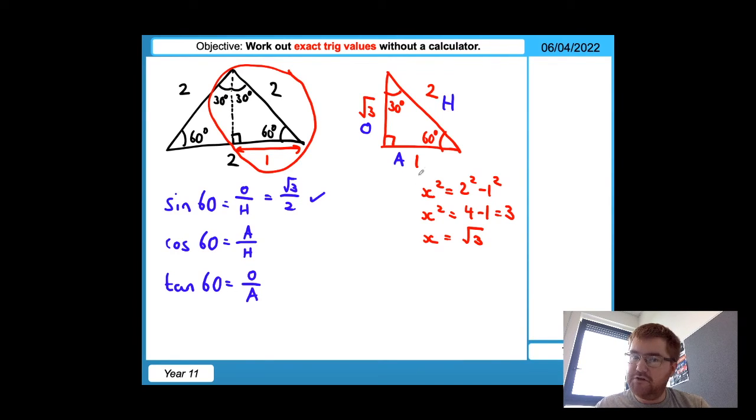Cosine 60 is equal to A, which is one, over hypotenuse, which is two. So cosine of 60 is equal to a half. And then tan 60 is equal to O over A. So opposite is root three, adjacent is one, and that's just equal to root three. So those are our first three exact values from this triangle. Sine 60 is root three over two, cosine 60 is equal to a half, and then tan 60 is equal to root three.